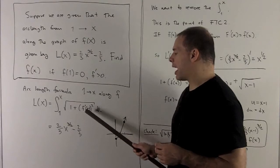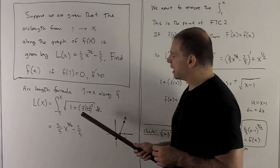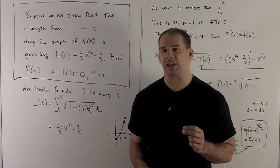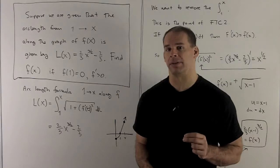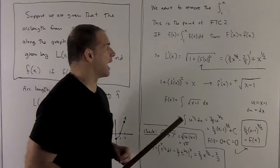So what we want to do is, we want to isolate this f'. Once I have f', I can get f, but to get to f', I need to figure out how to get past this integral sign. How you get past that integral sign is the whole point of the fundamental theorem of calculus, second version.